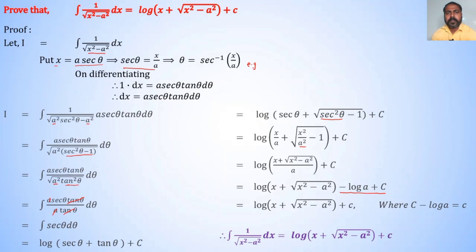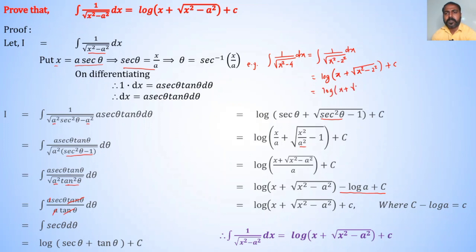For example, ∫1/√(x²−4)dx = ∫1/√(x²−2²)dx. Using the result with a = 2: the answer is log|x + √(x²−4)| + c.